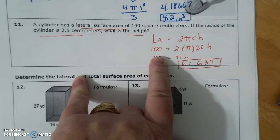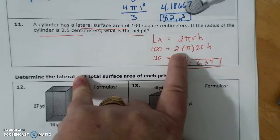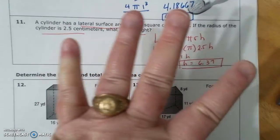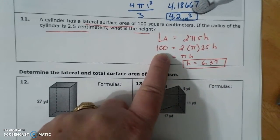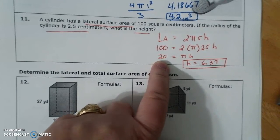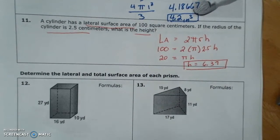So I have 100 here. I multiplied 2 times 2.5 to get 5. And then I did 100 divided by 5, which is 20, which gave me my pi and my h. Then I divided both sides by pi, so I got 6.37.